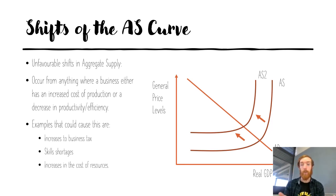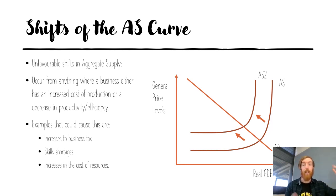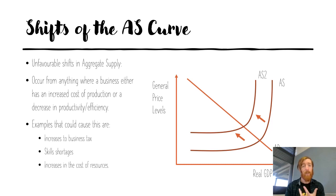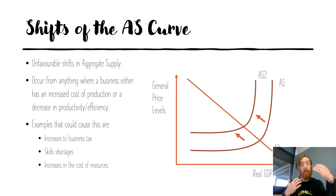Other things can cause this too — skill shortages in certain industries drive prices up because businesses have to pay more in wages for in-demand workers, and they pass that on to consumers. Anything that shifts the curve to the left is cost inflation. Another major example right now is the Australian dollar falling significantly, which means imports used as factors of production are more expensive. Businesses that use imports as inputs in production then increase their prices to make up for that.